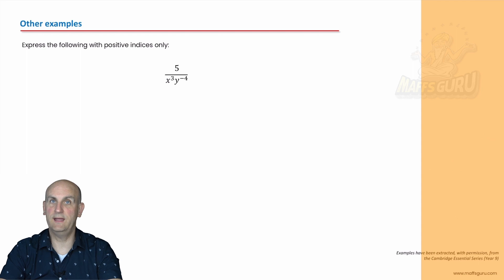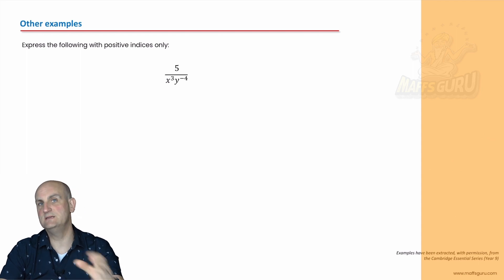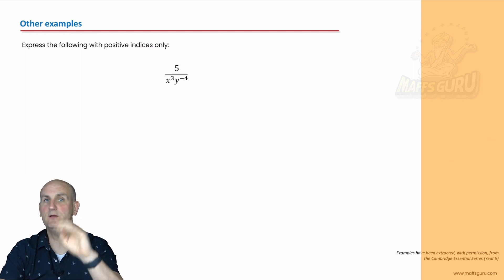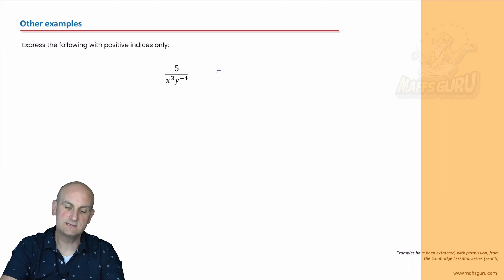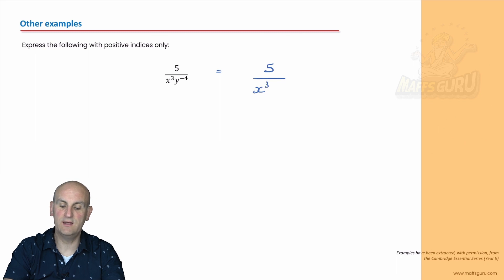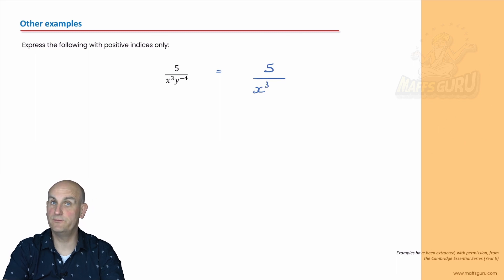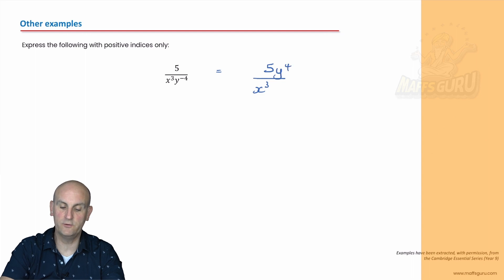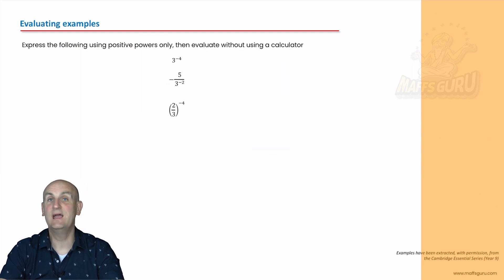What about this one? Only look for the negative powers — if it's on the denominator, move it up. Is the five negative? No — leave it there. Is x to the power of three negative? Leave it there. Is the y to the minus four? It is — so I'm going to write that as y to the four. And I'll just reformat it so it looks a little bit nicer.